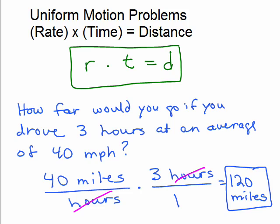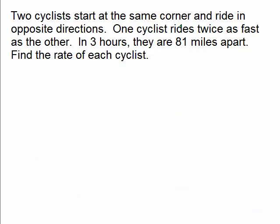What we're going to do is take some word problems and try to get a picture. We're not going to solve them yet. We're going to get a picture of what's going on. Here's a word problem: Two cyclists start at the same corner and ride in opposite directions. One cyclist rides twice as fast as the other.